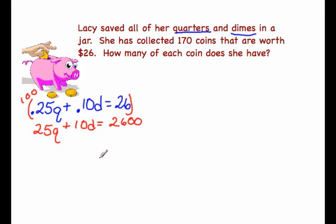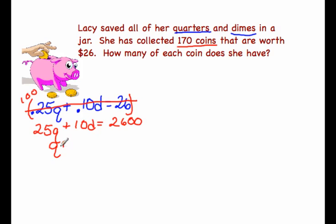That's only one equation though. We need to find another equation using a number we haven't used yet. Do you see the 170 coins? That tells us that we have a combination of 170 coins made up of quarters and dimes. So we could say all of our quarters plus all of our dimes equals 170.